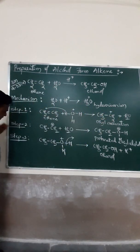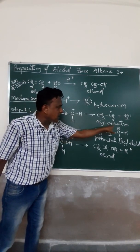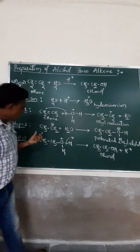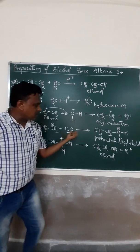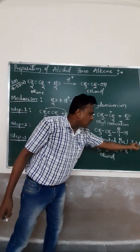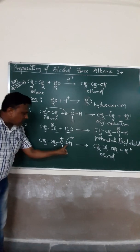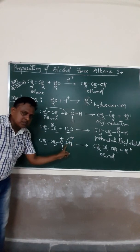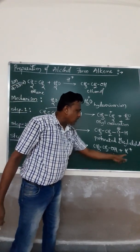It involves three steps. The first step is addition of a proton to form ethyl carbocation. And ethyl carbocation is treated with water to form protonated ethyl alcohol. Finally, the protonated ethyl alcohol to remove this proton and the hydrogen, to remove the proton, to form ethyl alcohol and H+.